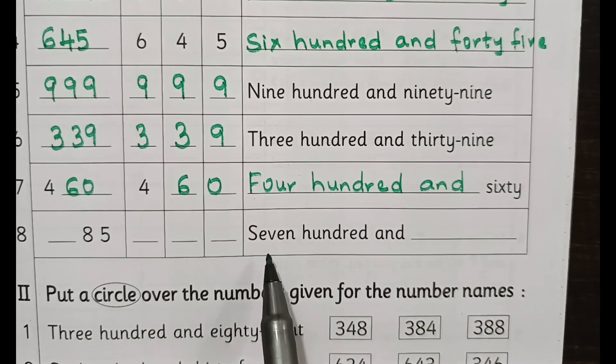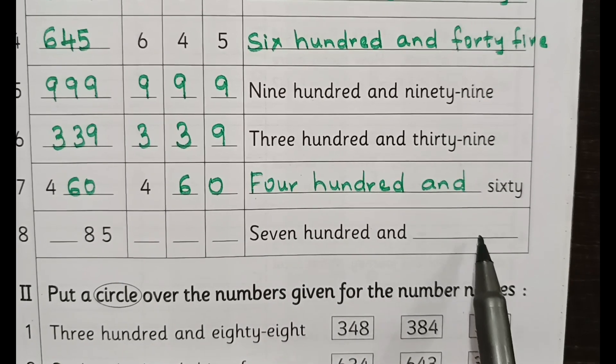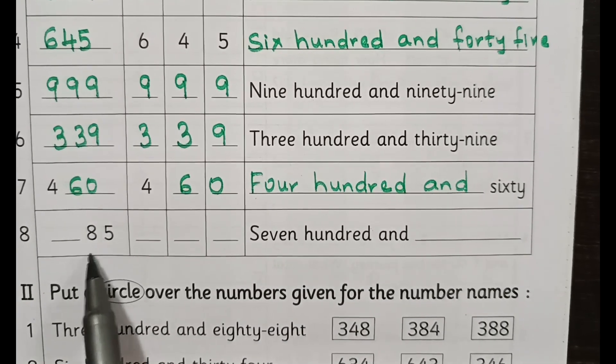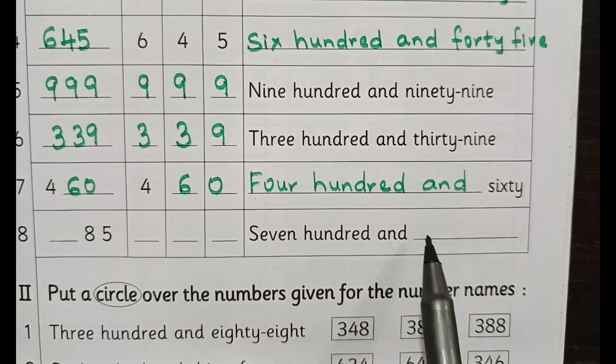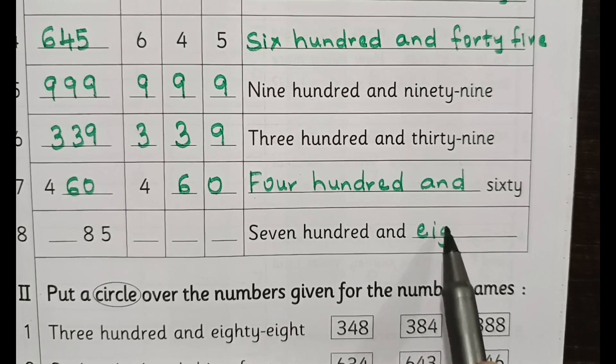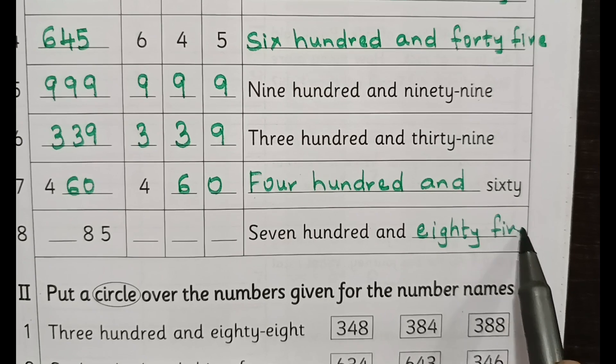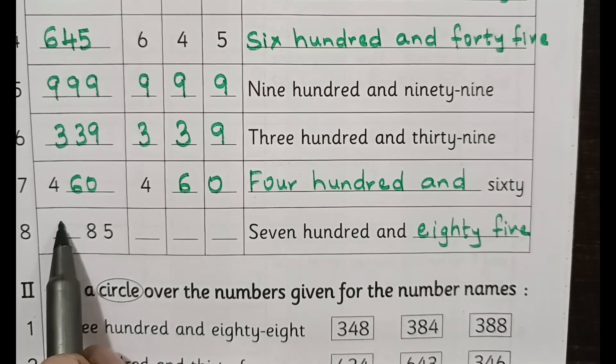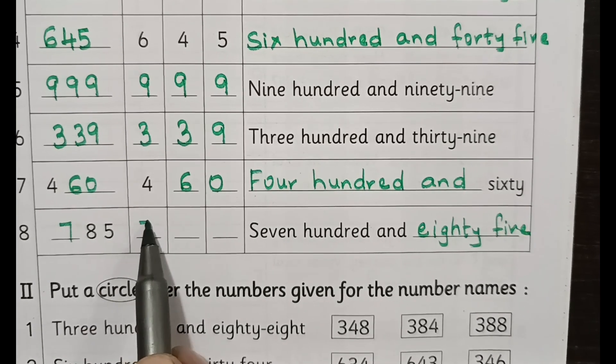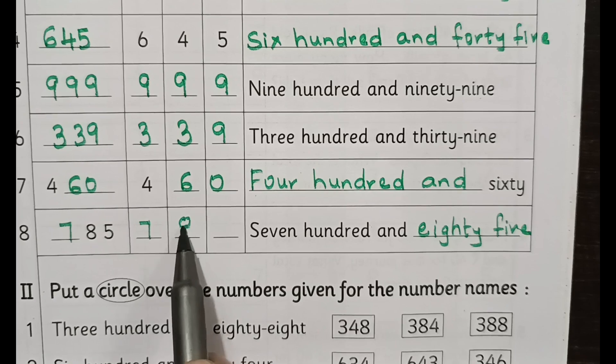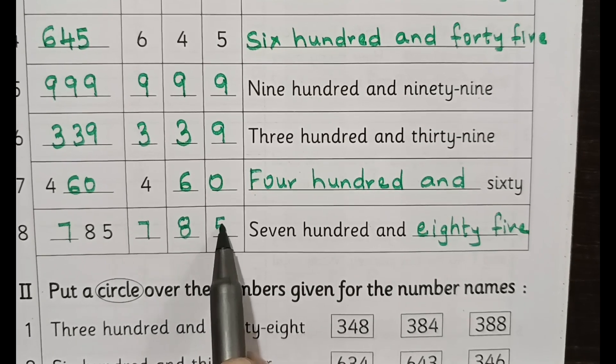Seven hundred and dash, here 85 is given, so you have to continue here. Seven hundred and eighty-five. Seven hundred and eighty-five: seven hundreds, eight tens and five units.